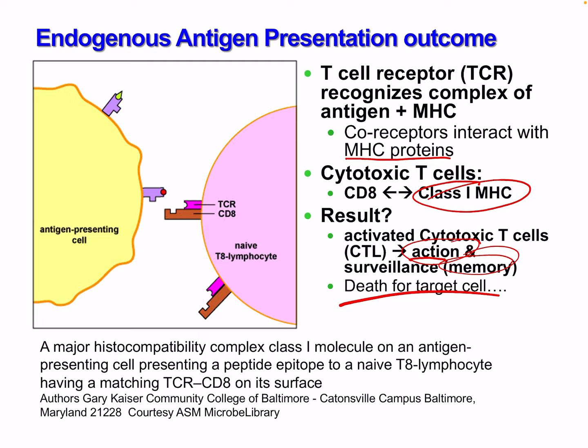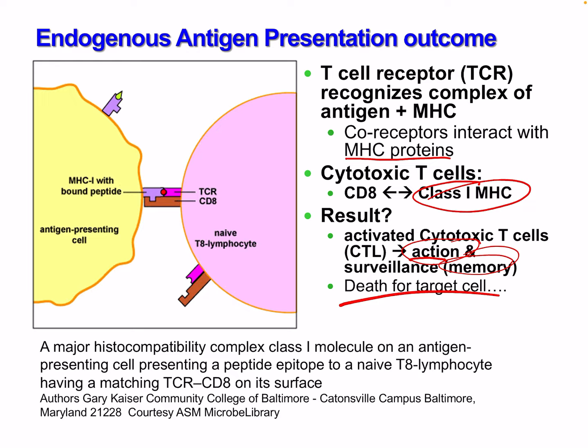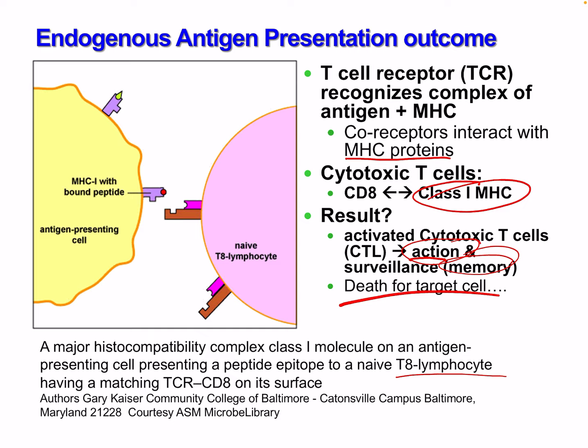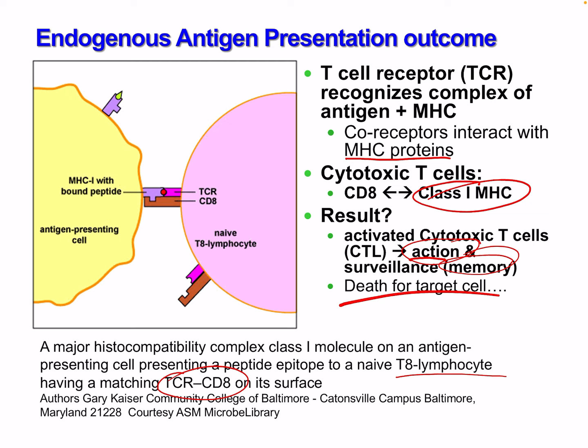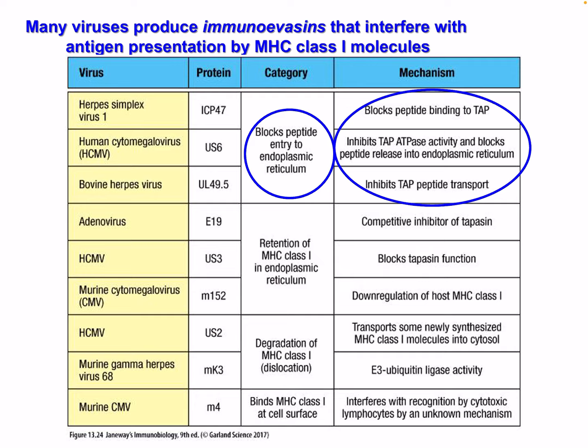An MHC class 1 molecule on an antigen-presenting cell presents a peptide epitope to a naive CD8 lymphocyte that has a matching T cell receptor and CD8 on its surface. With proper configuration and strong binding between MHC class 1 and the T cell receptor, the immune response is activated. Many viruses produce immunoevasion strategies that interfere with antigen presentation by class 1 MHC.